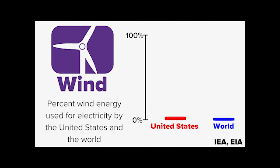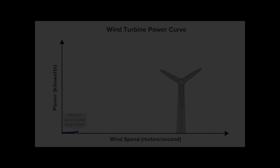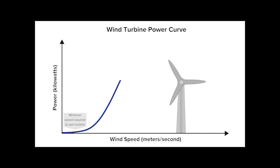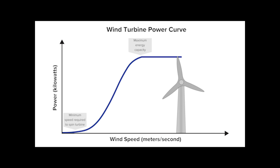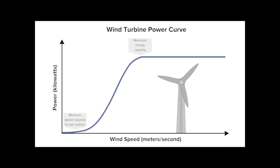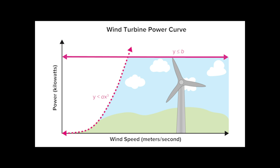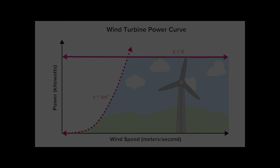Wind power captures energy from moving air or wind. The power curve of a wind turbine is a graph that indicates how large the electrical power output will be for the turbine at different wind speeds, and can be represented by systems of inequalities where the curve represents viable wind speeds for wind energy capture.